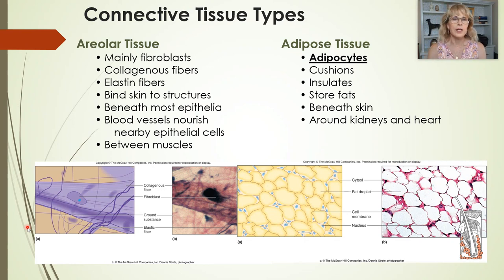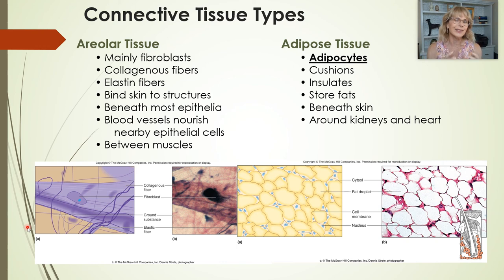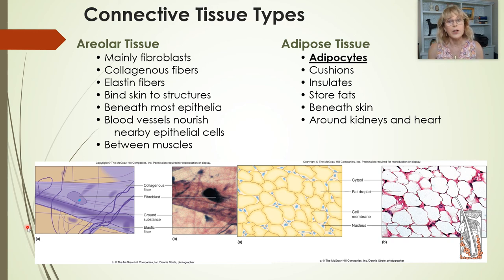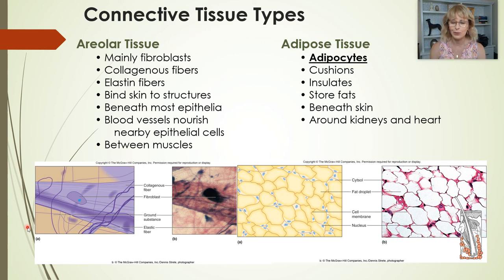So far we have discussed two different kinds of connective tissue. We've talked about areolar tissue, which is a kind of disorganized connective tissue that loosely attaches things together. The skin is attached to the underlying muscle by areolar tissue, and in sports massage, the connections between muscles get loosened up — what they're working on is areolar tissue. We also talked about adipose tissue.